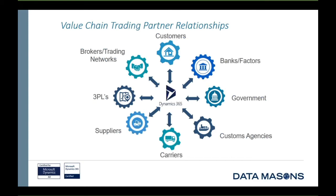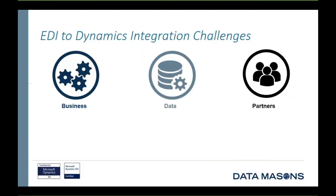The value chain partner relationships that can exist are encapsulated in a diagram going beyond your suppliers, warehouse partners, and customers. It includes finance companies like banks and factors, government customs agencies, and all the different endpoints that data might come from and go to within your business — in and out of the Dynamics platform. Getting there, however, has challenges that can be grouped into three categories.